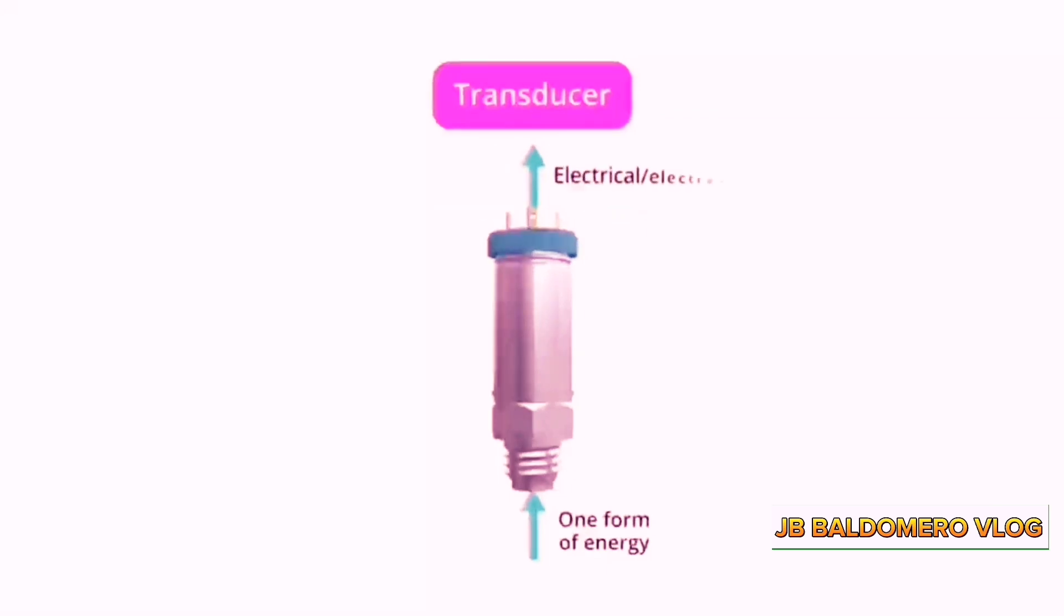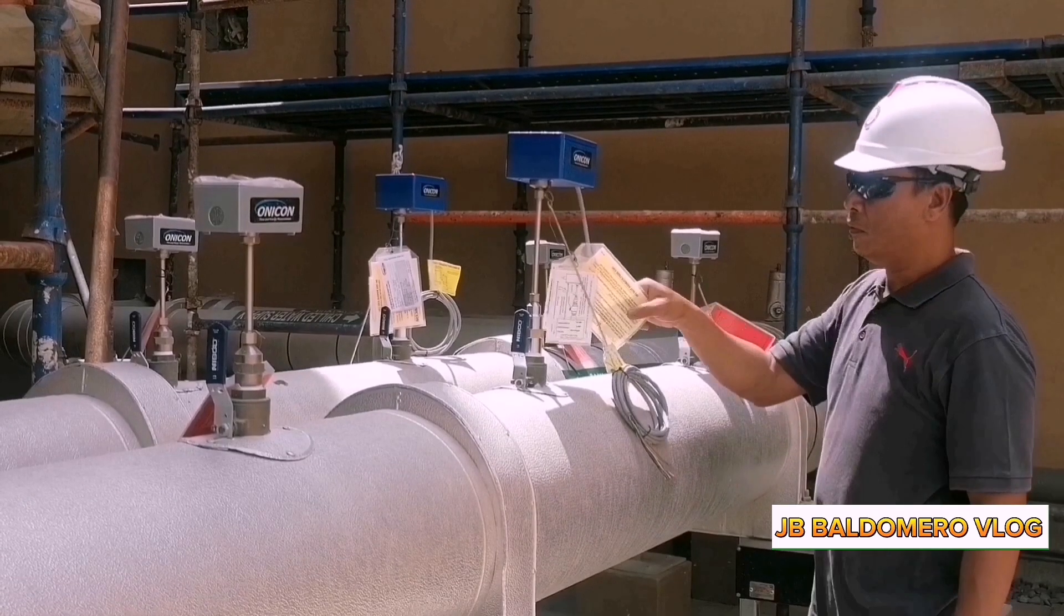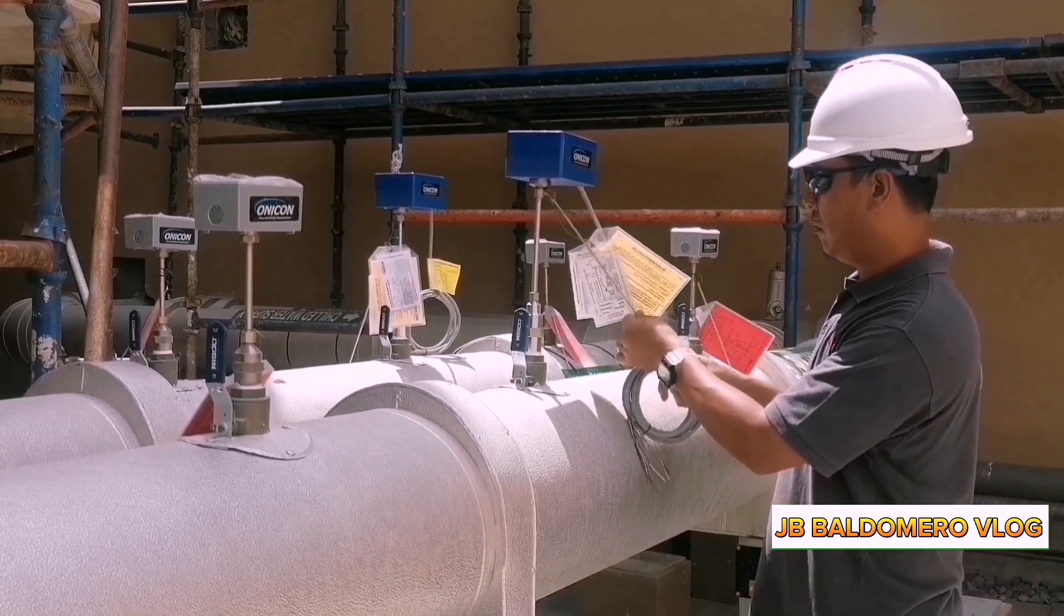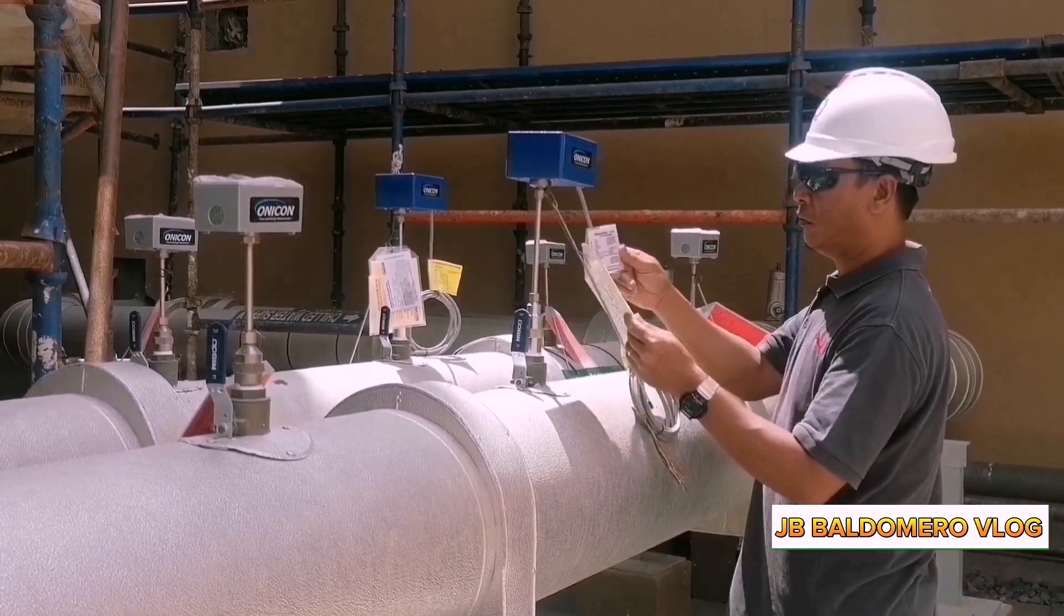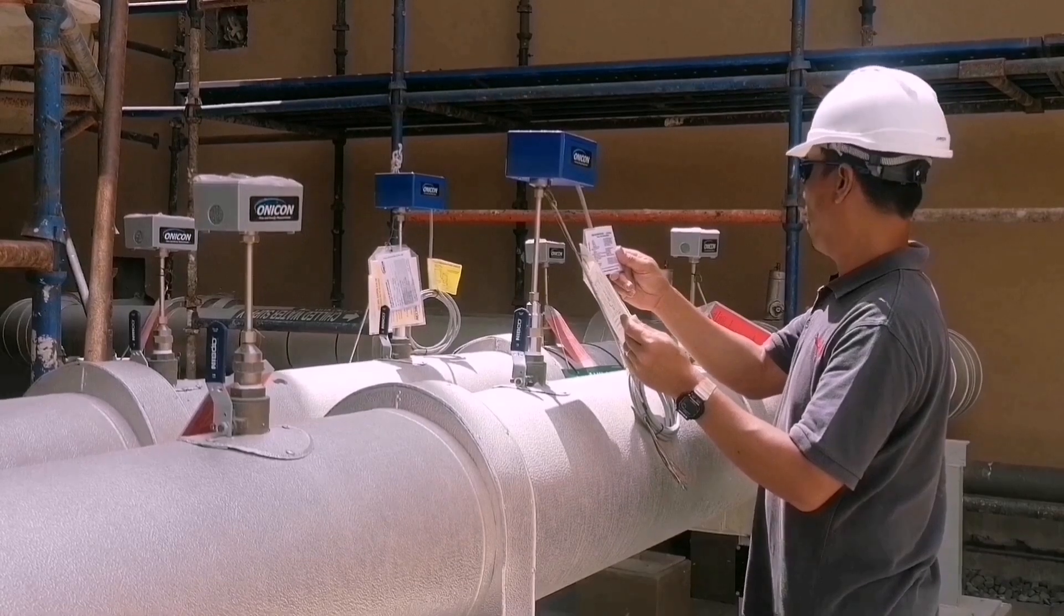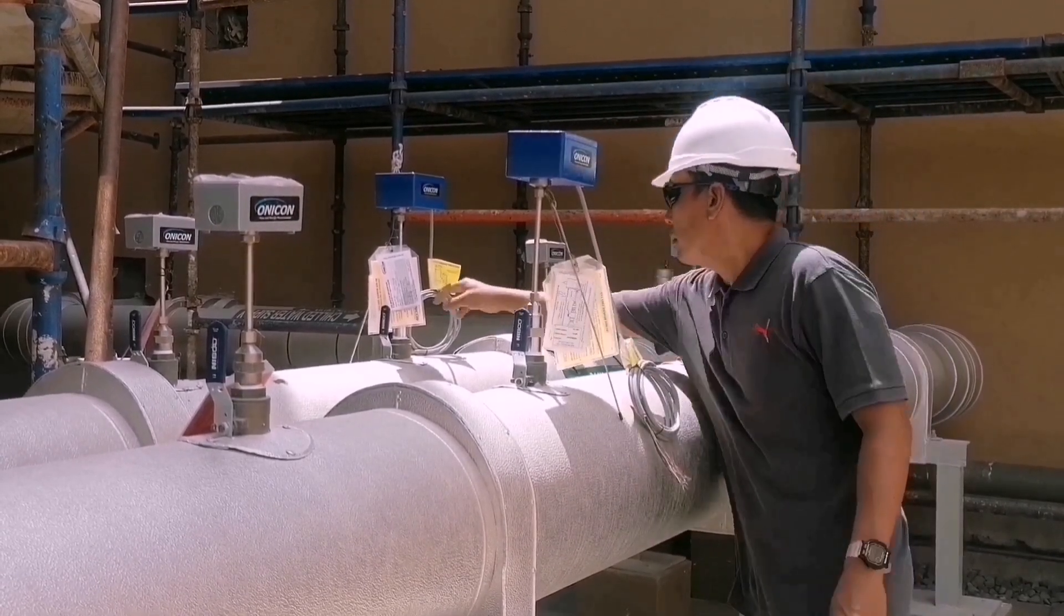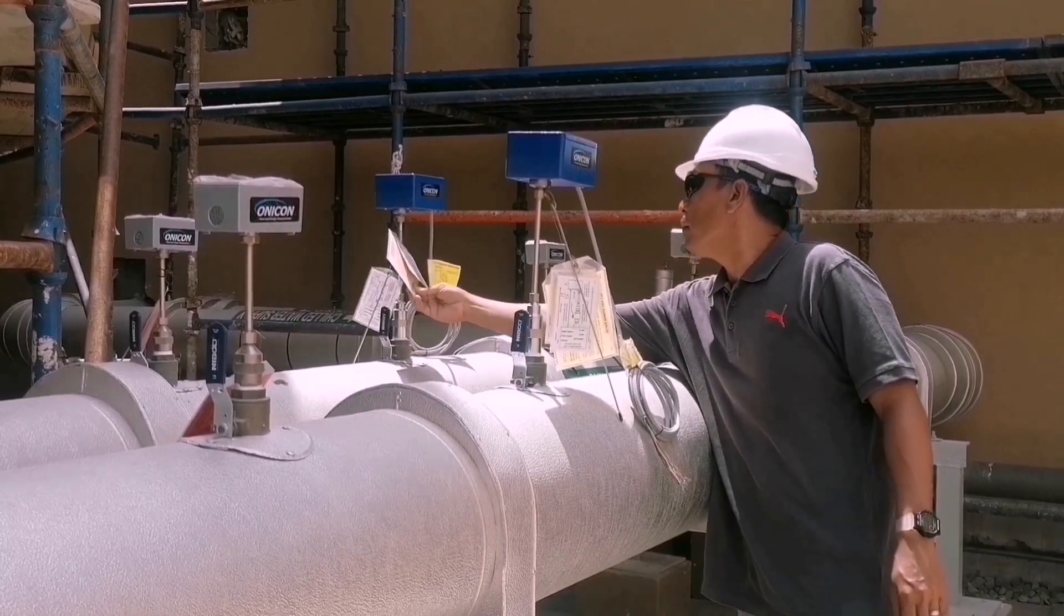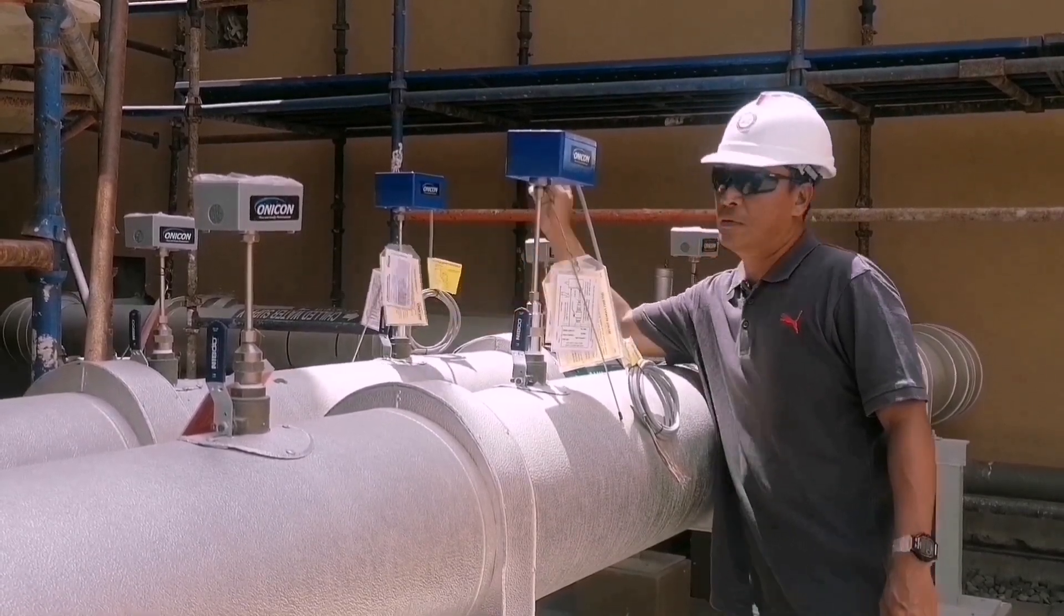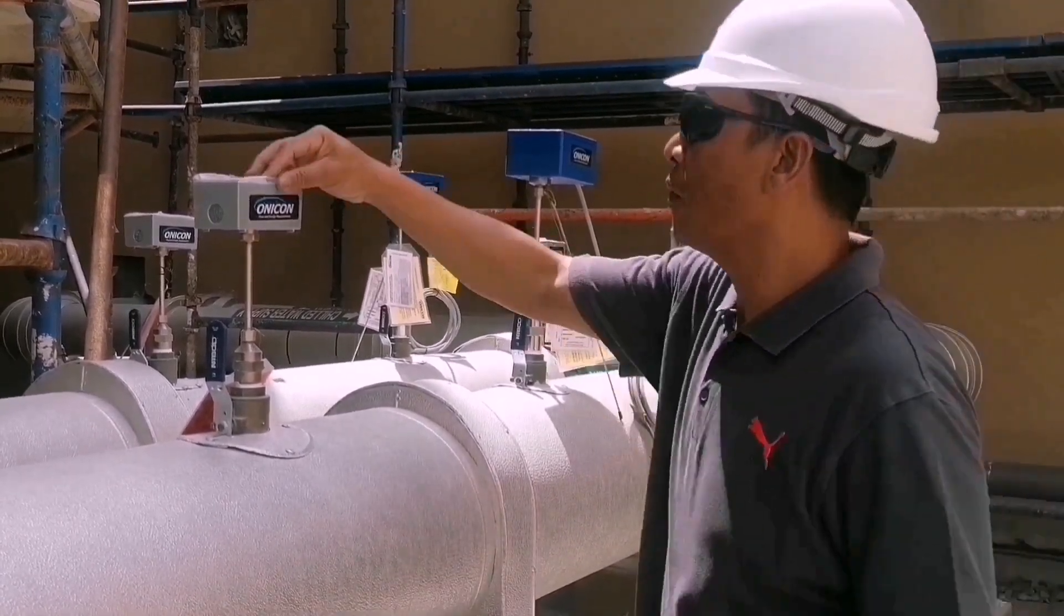A sensor does not have any other components except its sensing elements. The difference between sensors and transducers: both are used to sense a change within the environment they are surrounded by or an object they are attached to.